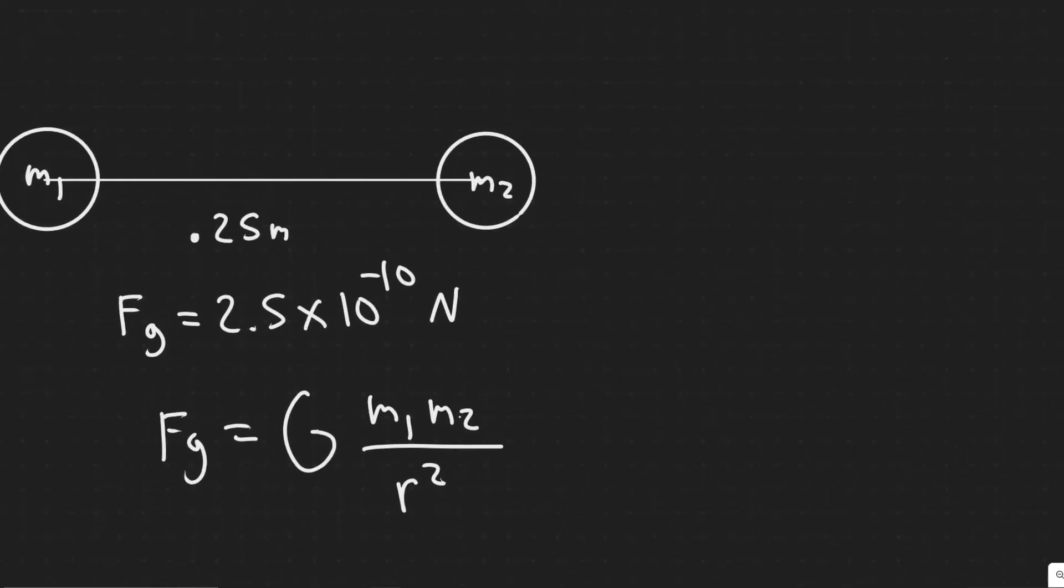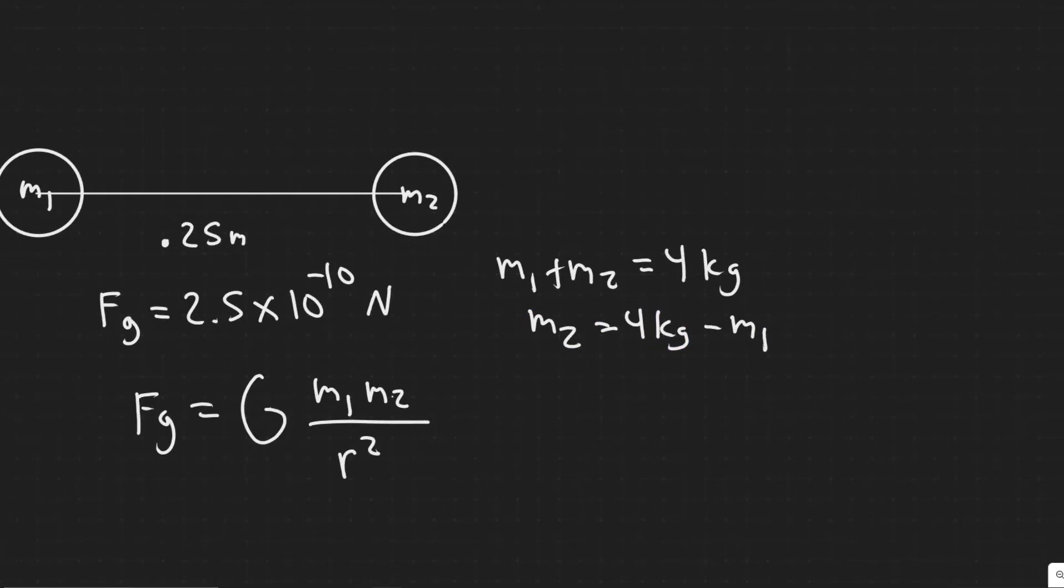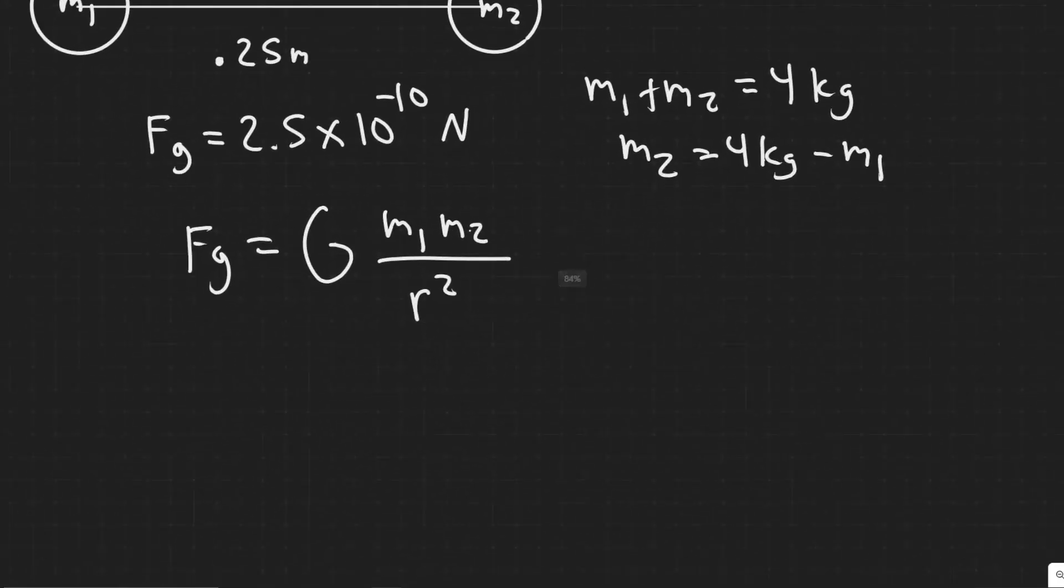So they tell us that the total mass which is m1 plus m2, their masses added up, is 4 kg, which basically tells us if we want to get it in terms of m2 we'll say m2 is going to be 4 kg minus m1.